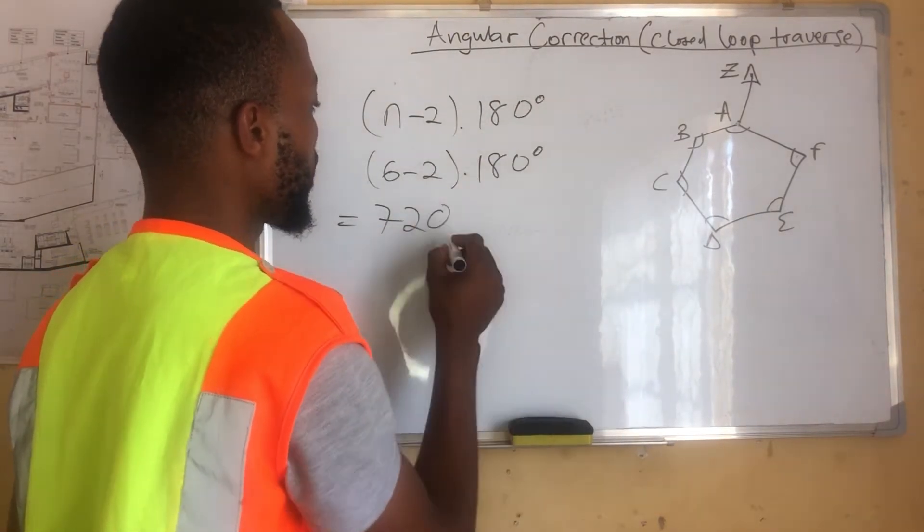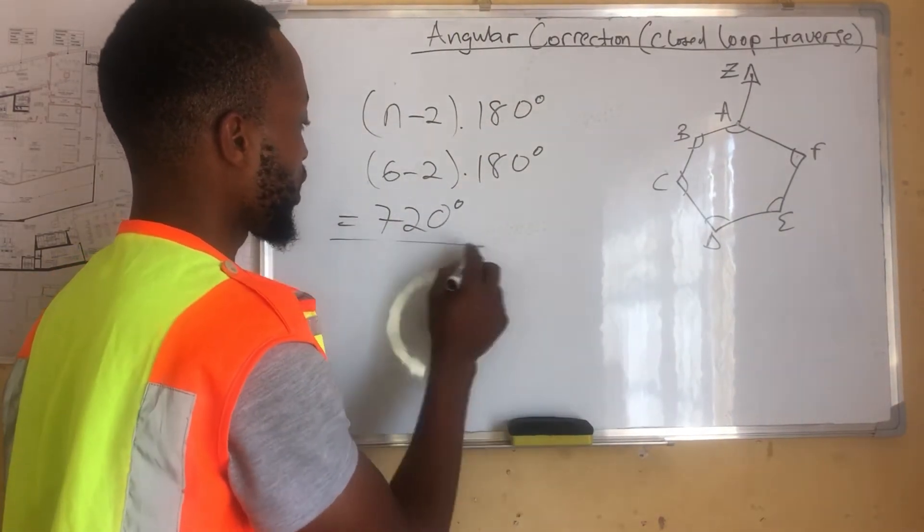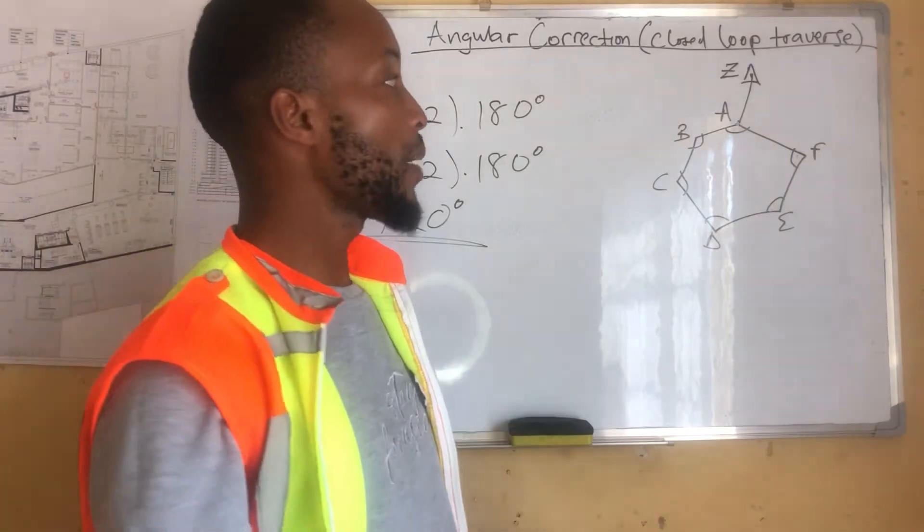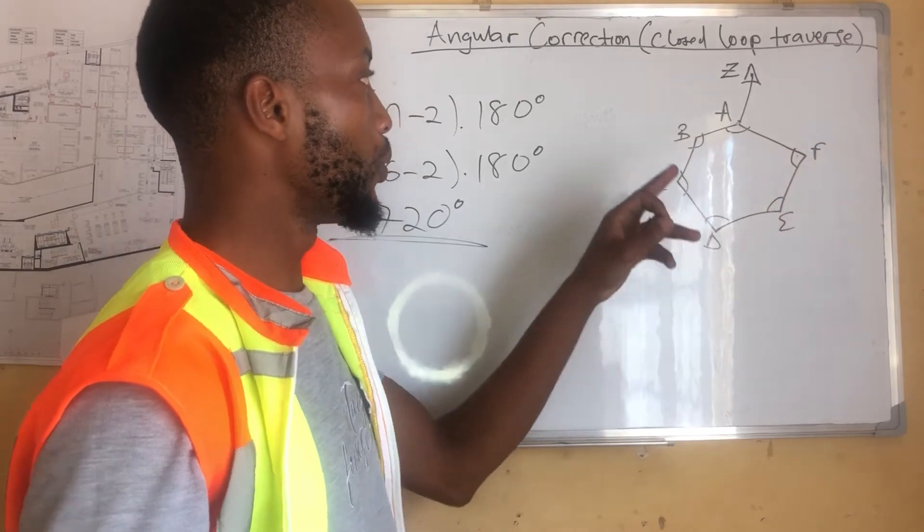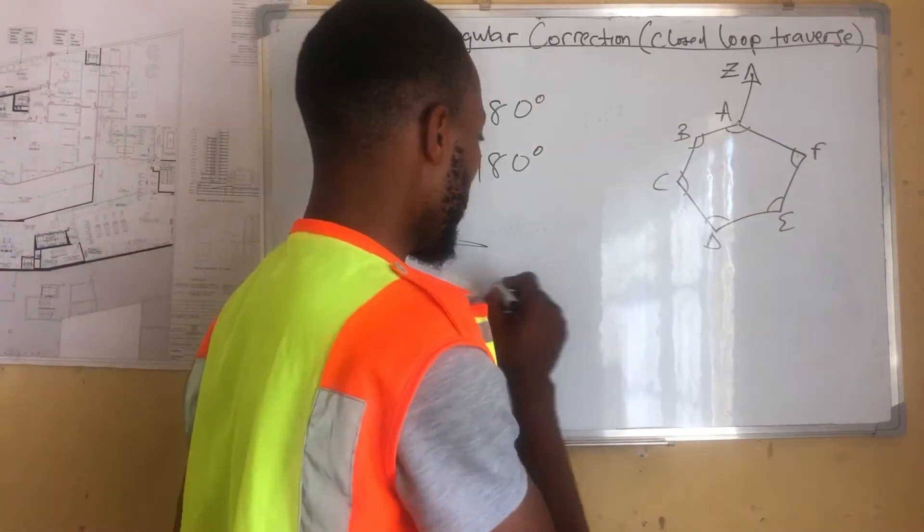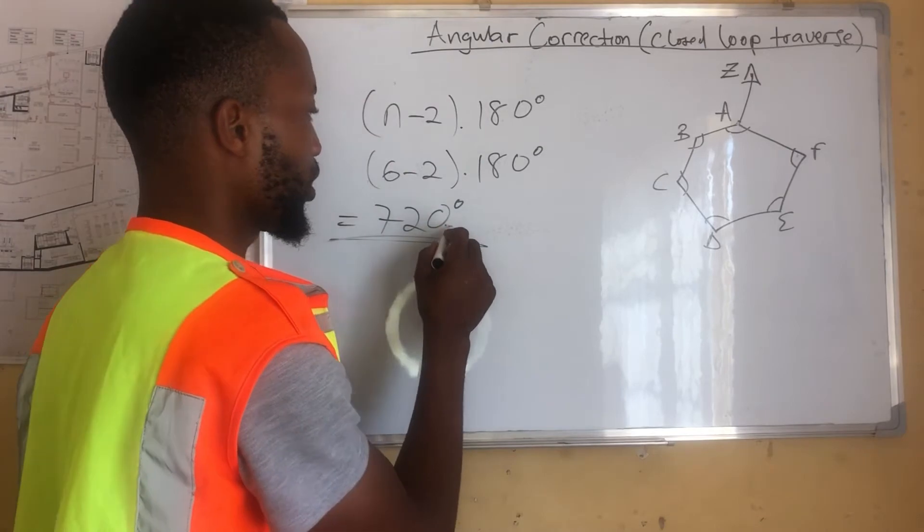we will say 6 minus 2 multiplied by 180, which gives us a sum of 720. 180 is 180 degrees. Here is 720 degrees. If we sum up our angles, angle A to F, we are supposed to get 720.